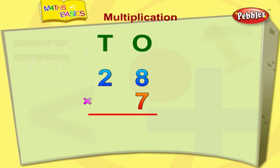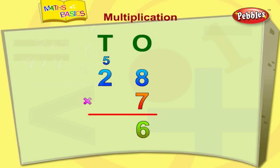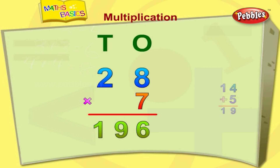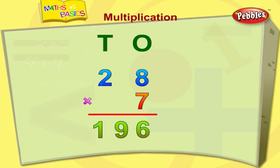Multiply the ones column first. Eight sevens are fifty-six. Write six down and carry the five to the tens column. Multiply the tens column — two sevens are fourteen. Add the carried five to fourteen — we get nineteen. Therefore, twenty-eight multiplied by seven is equal to one hundred and ninety-six.